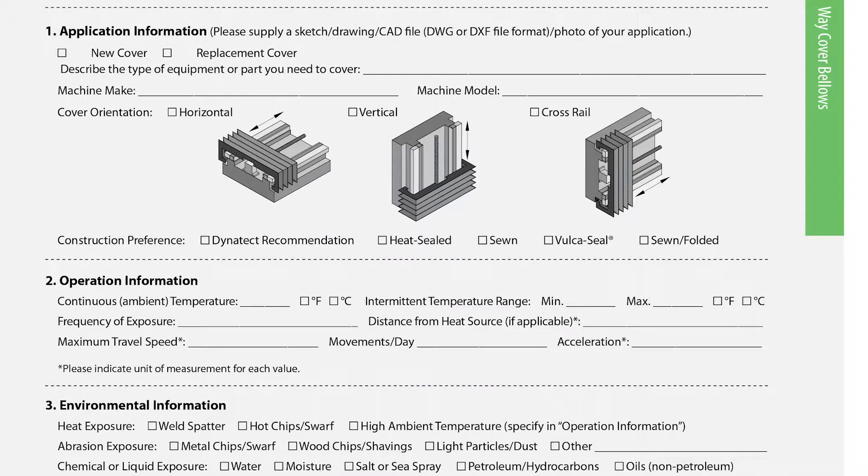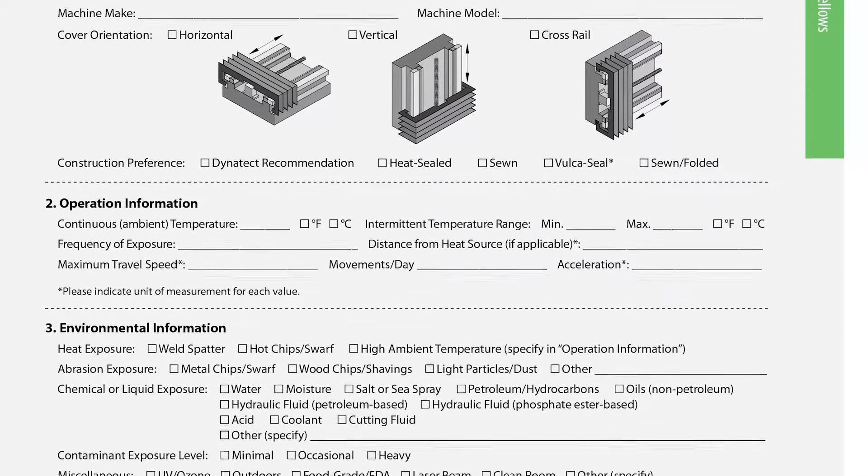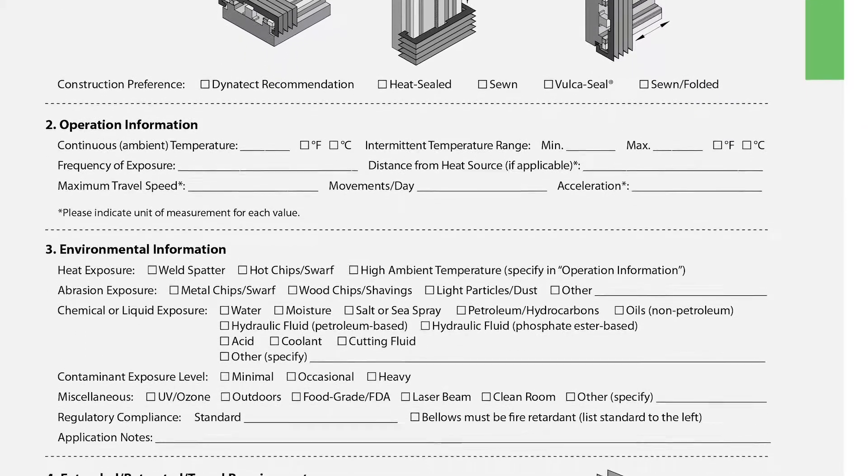On page 1, sections 1 through 4 collect key application details such as the cover orientation, travel speed, operating environment, and machine travel.